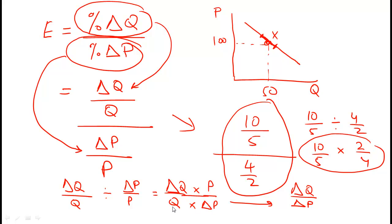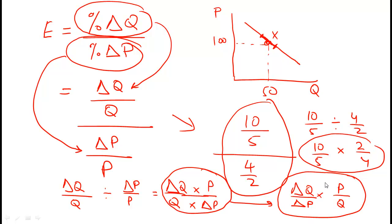So the simplified form is: elasticity equals (Δq / Δp) × (p / q). In other words, change in quantity over change in price, multiplied by price over quantity.